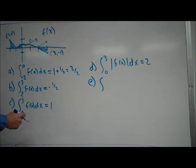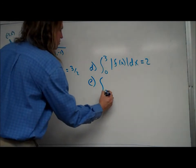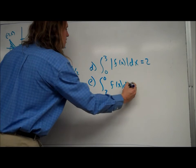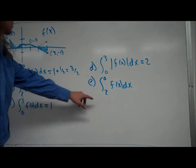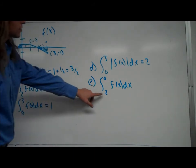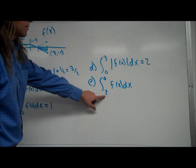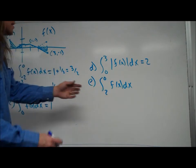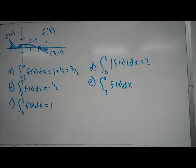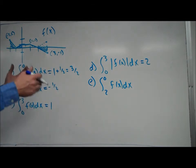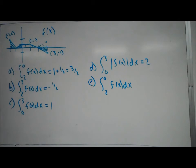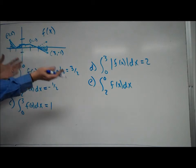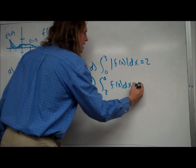Let's look at what happens if the interval is switched — say the integral from 2 to 0 of f of x. You'll notice the larger number is on the bottom. What happens is it takes whatever the answer would normally be and gives you the opposite sign. The area from 0 to 2 is 1 plus 1 half, which is 3 halves. Normally it would be 3 halves, but since the interval is switched, it ends up being negative 3 halves.